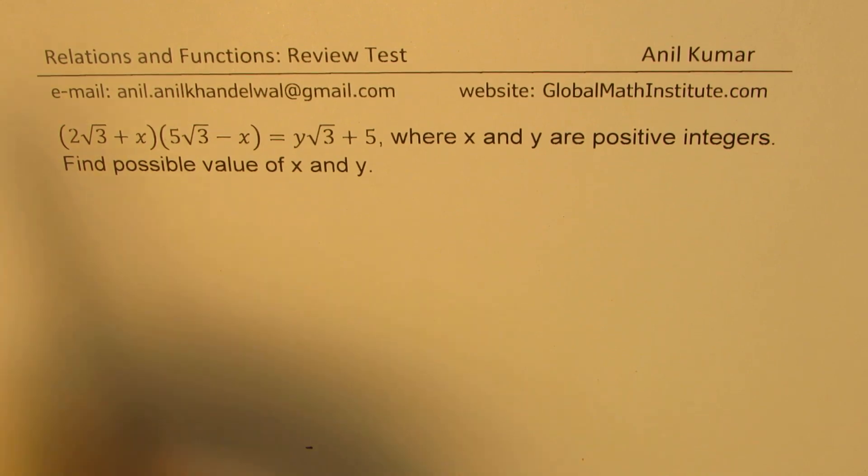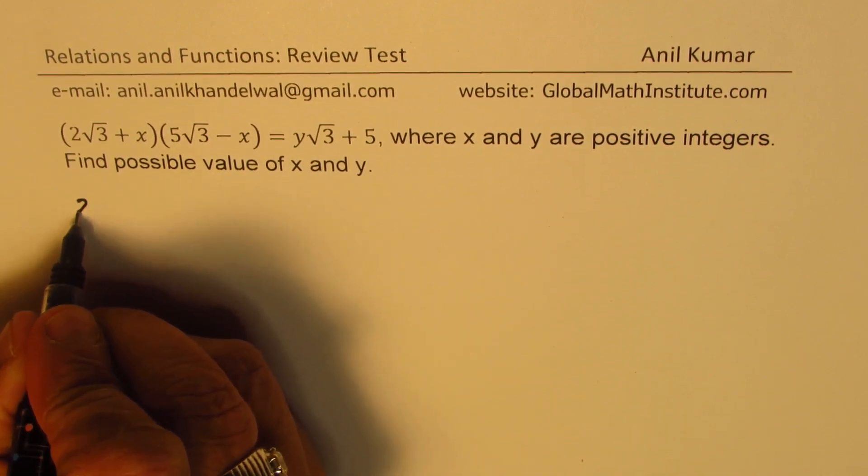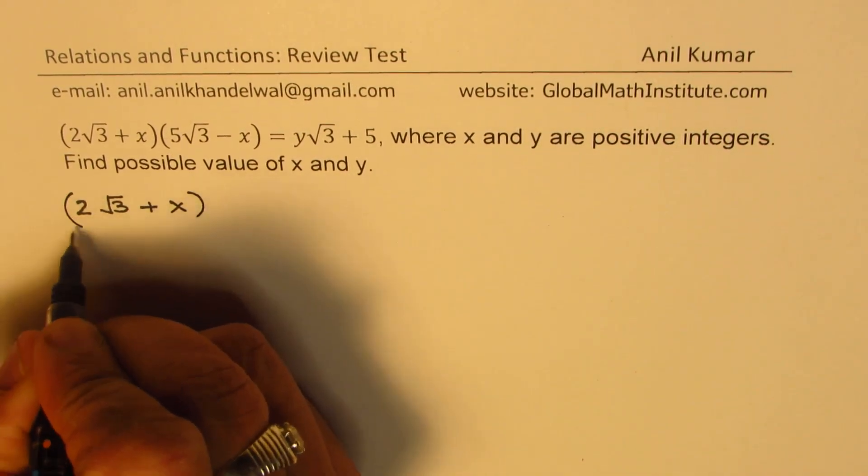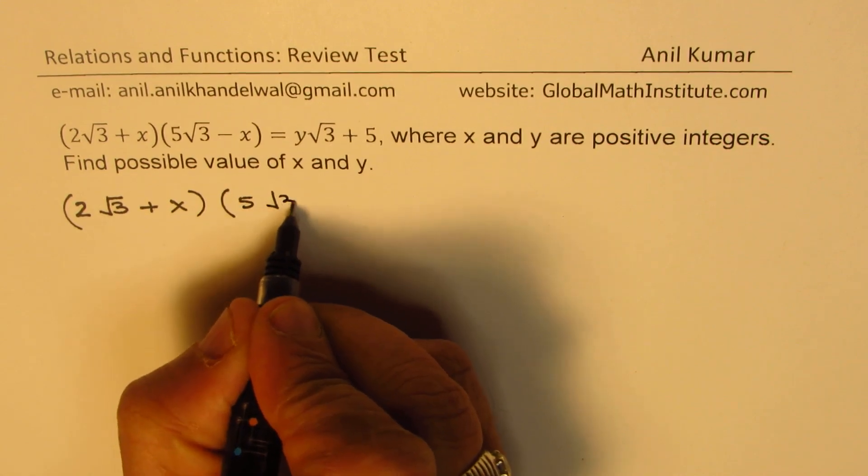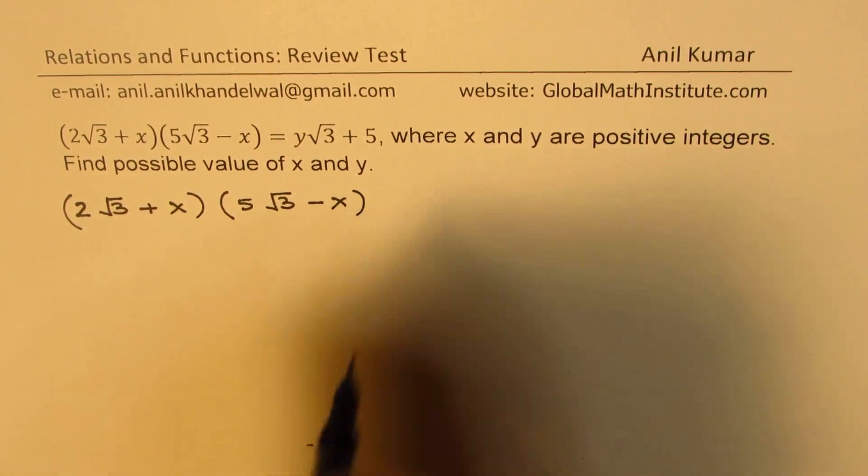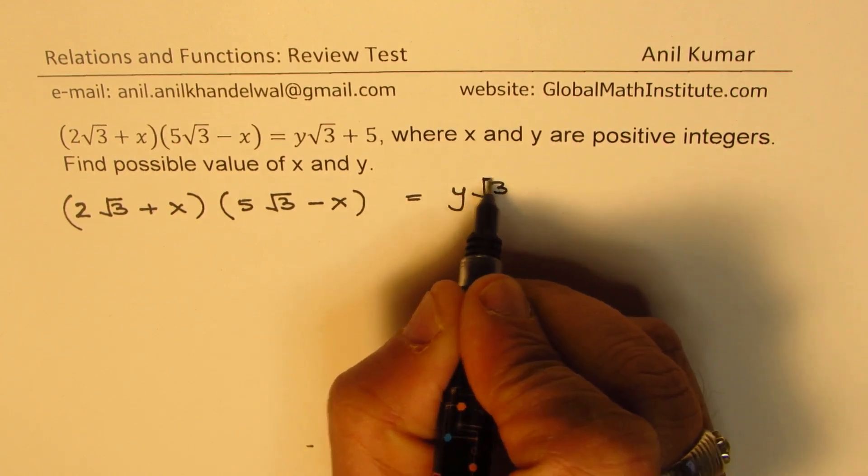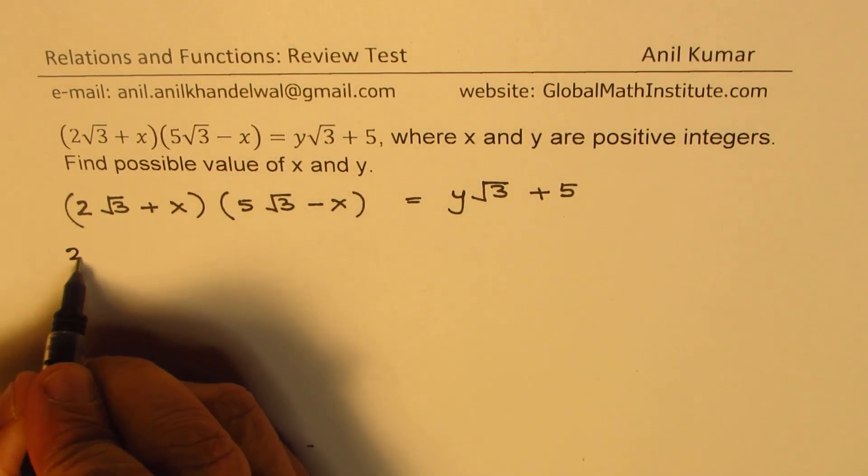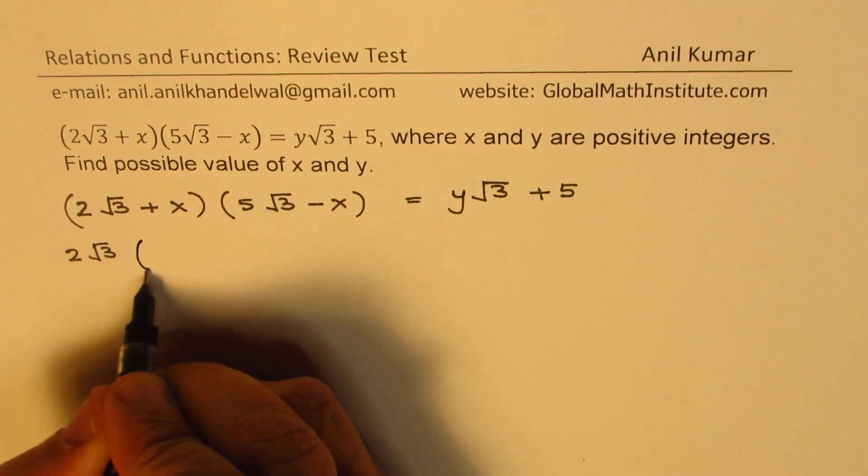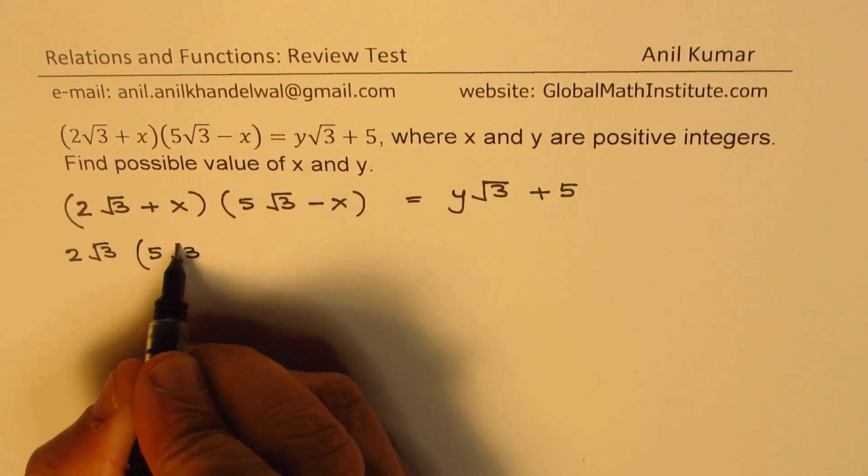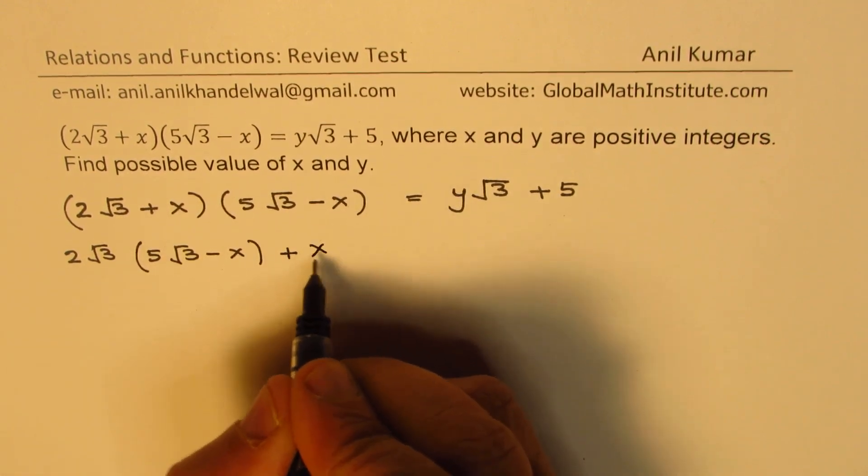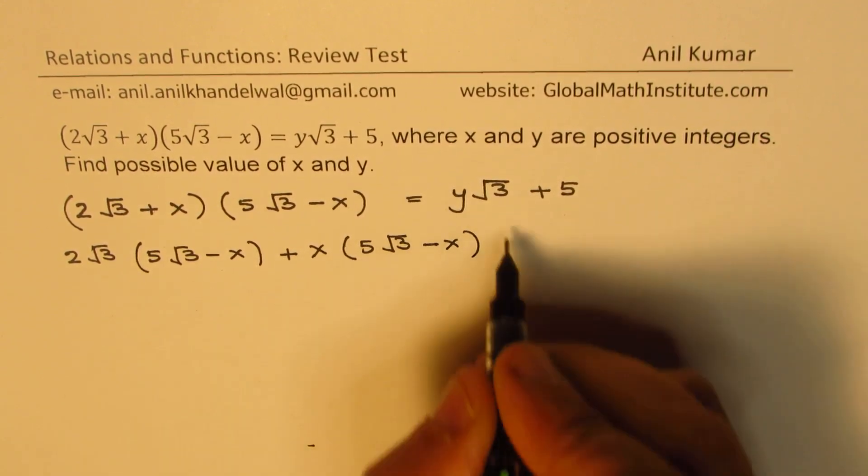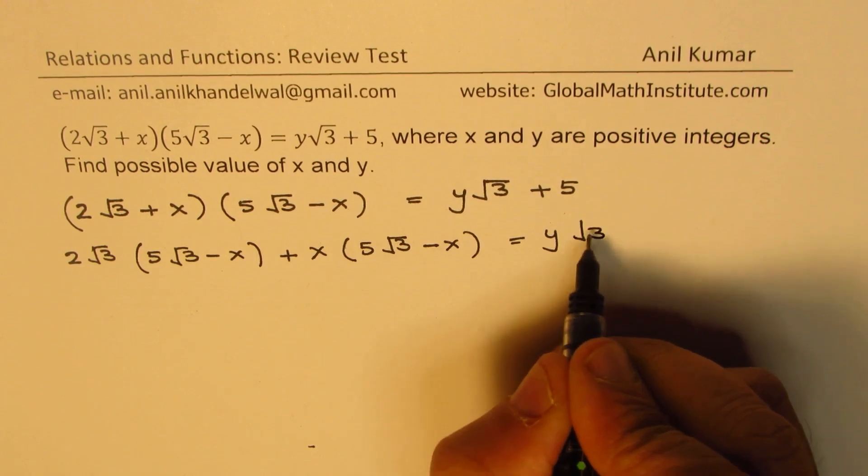So let's begin by expanding the left side. Let me first copy the question here again. We have 2√3 + x times 5√3 - x equals to y√3 + 5, right? So let's expand this side. We will first multiply 2√3 with both of them using the distributive property, and then with x.